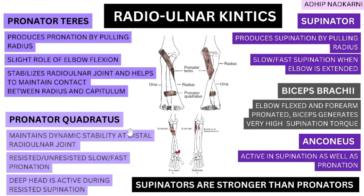The next muscle is the pronator quadratus, located lower down near the distal radioulnar joint. It maintains dynamic stability at the distal radioulnar joint and creates pronation force during resisted and unresisted, as well as slow and fast pronation. Importantly, the deep head of pronator quadratus is also active during resisted supination, suggesting it plays a key role in stabilizing the radioulnar joint during both supination and pronation. These are the two main pronators.